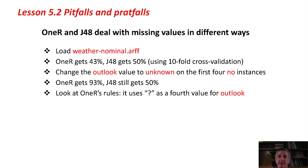Let me just take two simple and well-known examples: 1R and J48. They deal with missing values in different ways.